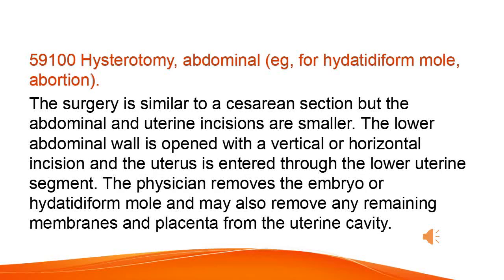Hysterotomy, Abdominal — e.g., for hydatidiform mole, abortion. The surgery is similar to a cesarean section but the abdominal and uterine incisions are smaller. The lower abdominal wall is opened with a vertical or horizontal incision and the uterus is entered through the lower uterine segment. The physician removes the embryo or hydatidiform mole and may also remove any remaining membranes and placenta from the uterine cavity.